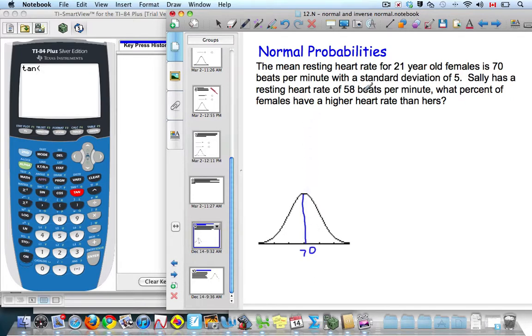Sally has a resting heart rate of 58 beats per minute. What percent of females have a higher rate than hers? So 58 is going to be roughly around here somewhere, and we are looking for this area on this side here.